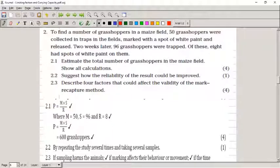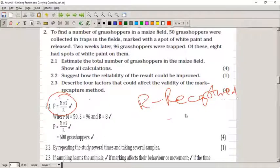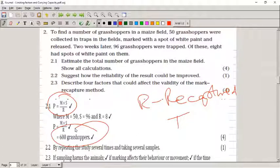Let's go on to question two. To find the number of grasshoppers in a maize field, 50 grasshoppers were collected in traps in the field, marked with a spot of white paint and released. Two weeks later, 96 grasshoppers were trapped. Of these, eight had spots of white paint on them. Again, you can use P equals M times S divided by R. This formula stays the same. Sometimes I use R stands for recaptured. I'm not sure why they use T in the formula, but as long as you remember that you divide by the amount of organisms that are recaptured. You replace M with 50, times it by 96, and divide it by 8, and you get an estimate of 600 grasshoppers in the population.